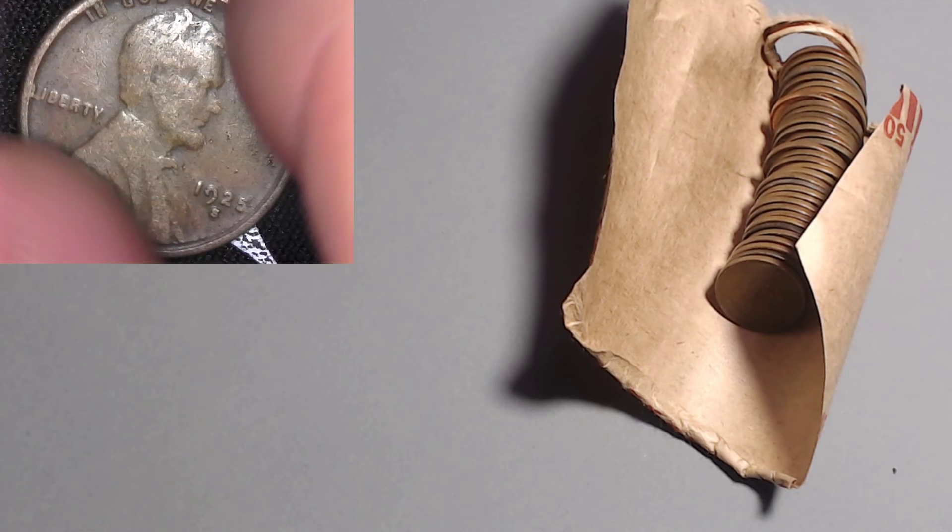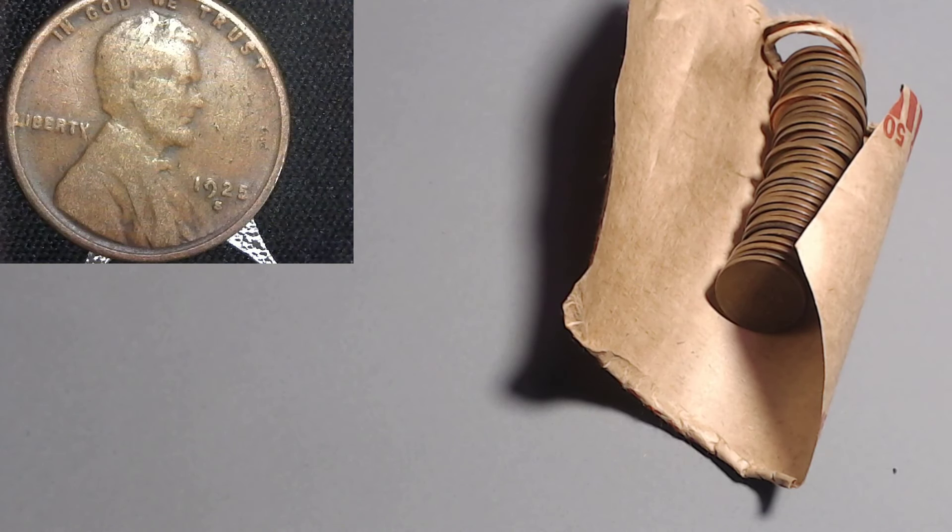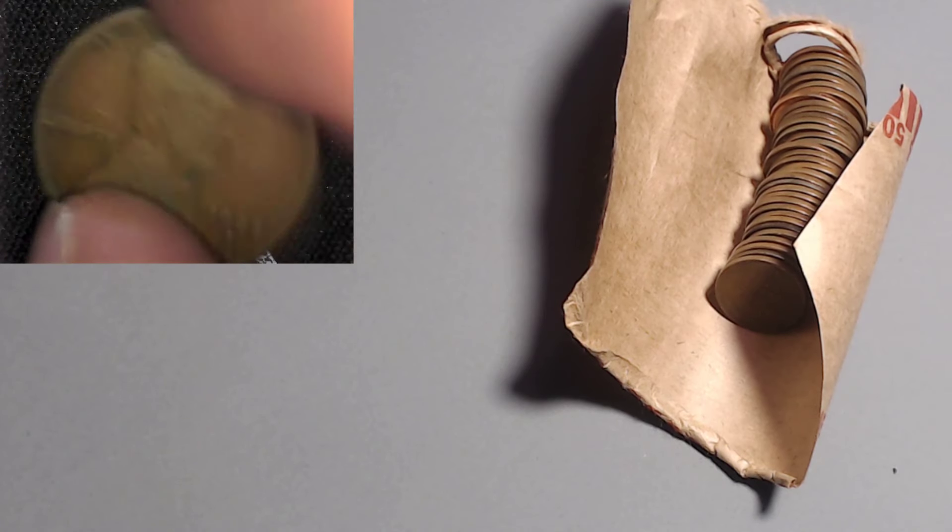And going on to a 1925 S. The 25 S with 26 million. Wow, this roll is really producing. That's three key dates in like four pennies. I'm impressed.